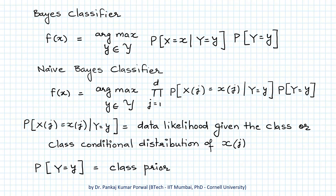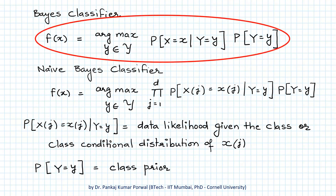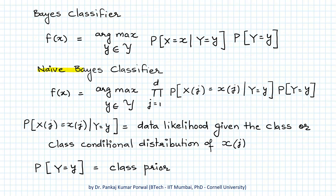So the Bayes classifier, given by this expression with the assumption of conditional independence of all dimensions, becomes the naive Bayes classifier, where P(X=x | Y=y) becomes the product of conditional probabilities for each dimension. As before, P(Xj=xj | Y=y) is the data likelihood given the class, or class conditional distribution of each dimension of X, and P(Y=y) is the class prior.